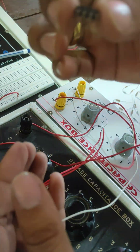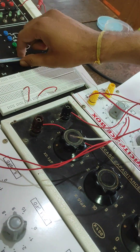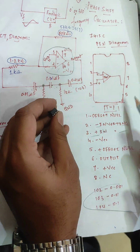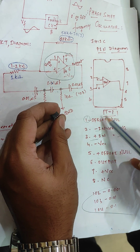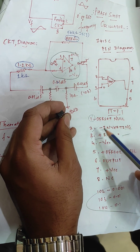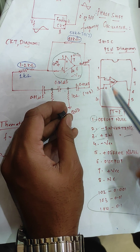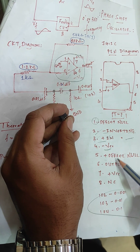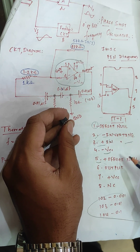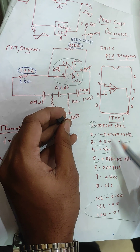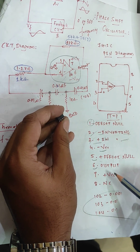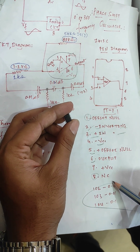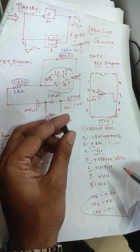The 741 op-amp has eight pins total. Pin 1 is the offset null, pin 2 is the inverting input, pin 3 is the non-inverting input. Pin 4 is the negative Vcc and pin 5 is again offset null. Pin 6 is the output, pin 7 is positive Vcc, and pin 8 is also offset null — not connected. This is the standard pin diagram of the 741 operational amplifier.